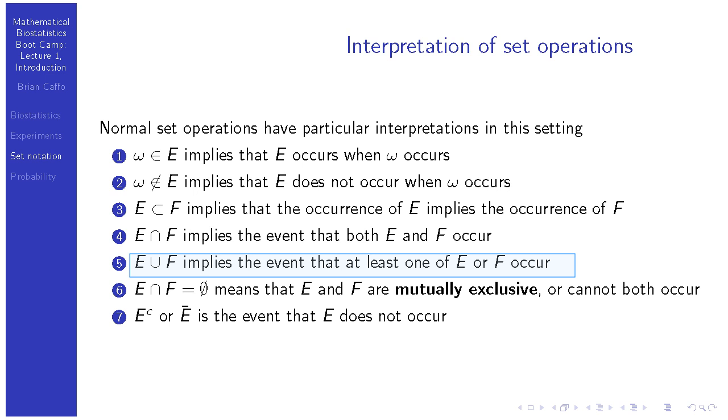E union F is the standard set notation for union, but in probabilistic interpretation, it means that at least one of E or F occur. So, in my previous example, it would mean that I either get an even number or a prime number, or both, in the case of 2. If E intersect F is the null set, that means that both E and F cannot simultaneously occur. So, imagine E is the set of even numbers, F is the set of odd numbers, then you cannot roll a die that is both even and odd. So, E intersect F will be the null set, and that's important enough that we give it its own name. So, in bold here, you see its own name. That's called mutually exclusive. So, if we say that two events are mutually exclusive, that means that they both cannot occur.